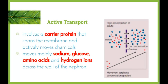Active transport can sometimes involve a carrier protein that spans the membrane and actively moves chemicals. Some of the substances removed include sodium, glucose, amino acids, and hydrogen ions across the wall of the nephron. The nephron is the functional unit of the kidney — it does all the work of removing water, saving water, and removing other substances.